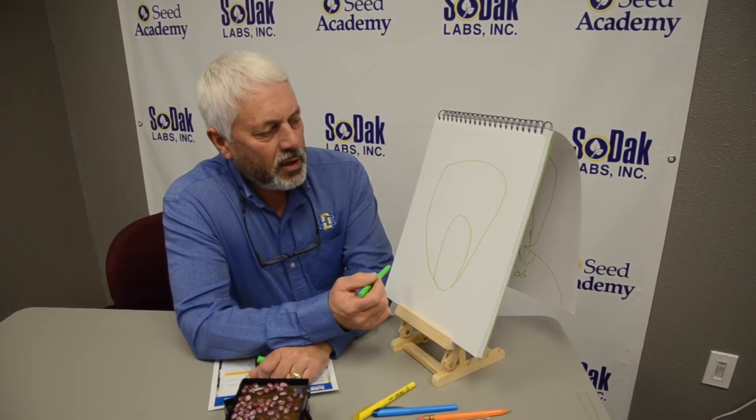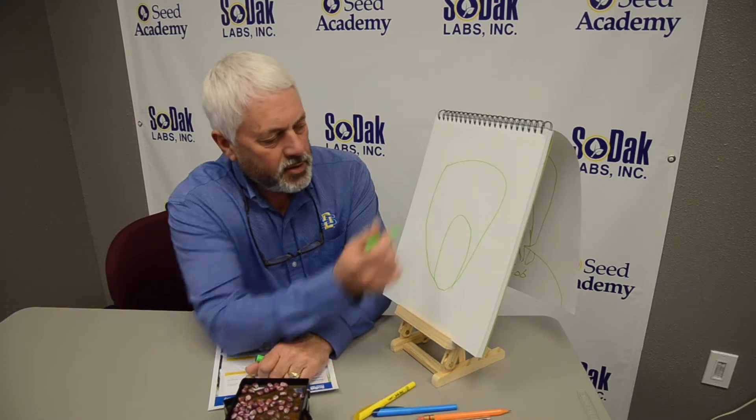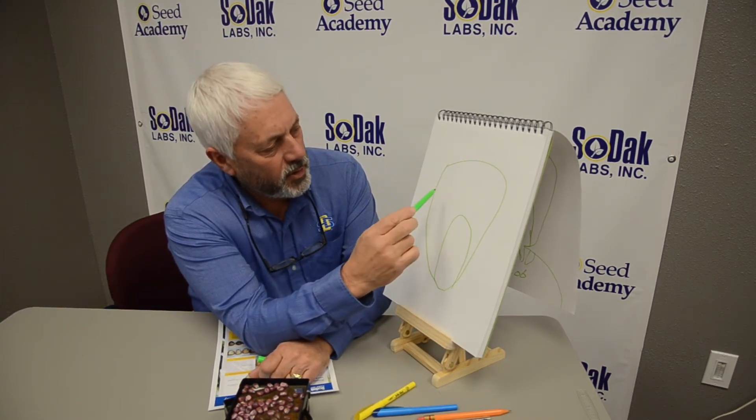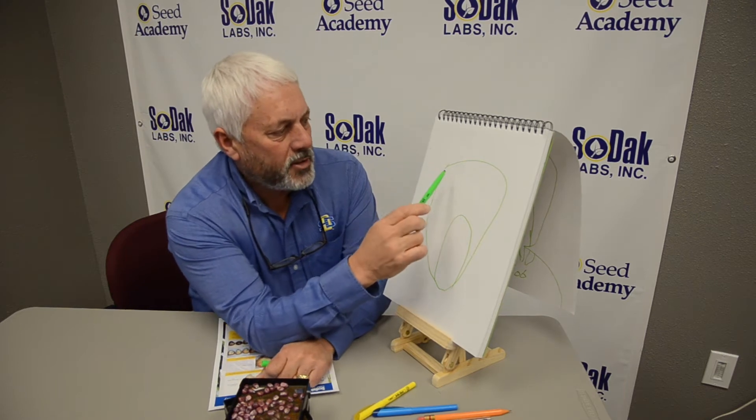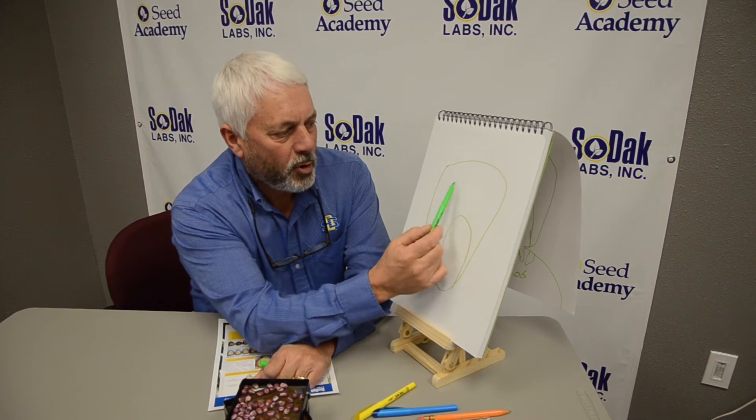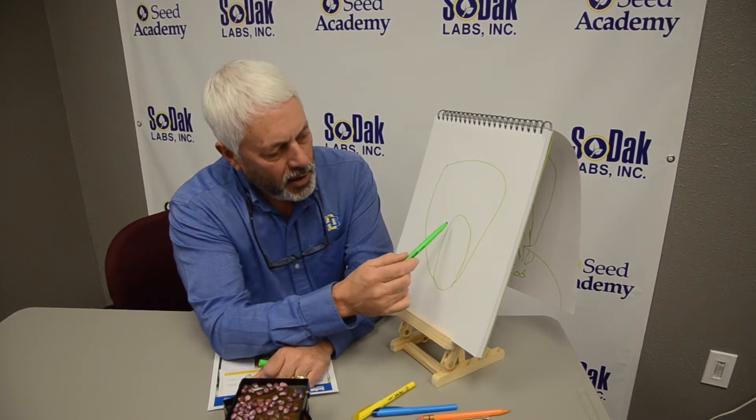So what we're doing in a pericarp damage test is we're looking at damage to the pericarp. The pericarp is basically the seed coat on the kernel. So here we have our endosperm area and then we have our germ face here.